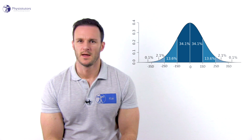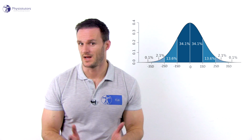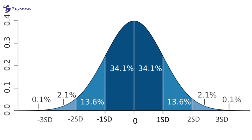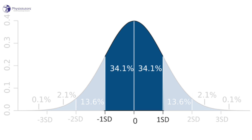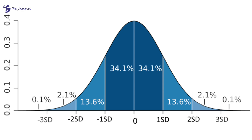When measurements of length, weight, pain scores, and functional limitations are displayed in a histogram, they usually take on a bell curve. This means that many values will lie around the mean, and values that deviate a lot from the mean are less frequent. 68.2% of all scores will fall within the mean plus or minus one standard deviation, and 95.4% of all scores lie within the mean plus or minus two standard deviations.